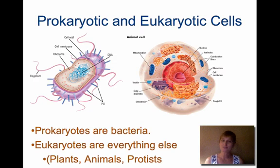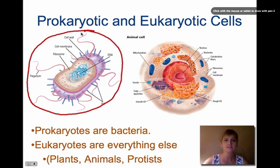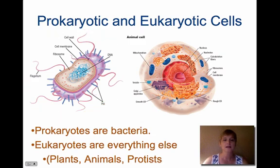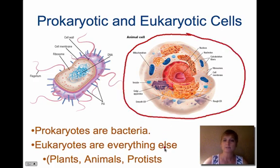I mentioned prokaryotic and eukaryotic cells, so let me tell you what those are. Prokaryotic cells are bacteria — every prokaryote is bacteria. And then we have eukaryotic cells. This one happens to be an animal cell, but plants are eukaryotic cells, as are protists and single-celled organisms. In fact, if it's not a bacteria, it's a eukaryotic cell.